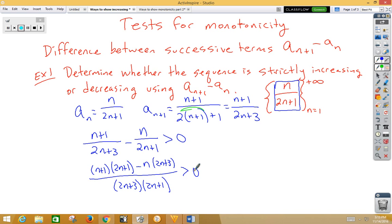So now we need to FOIL that. So if we FOIL that, we're going to get 2n squared plus 3n plus 1.